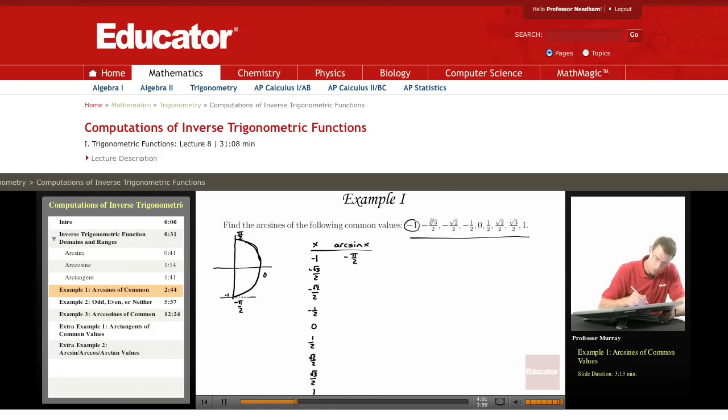Negative √3 over 2, that's an angle down there. So the angle that has sine of negative √3 over 2 must be negative π over 3.